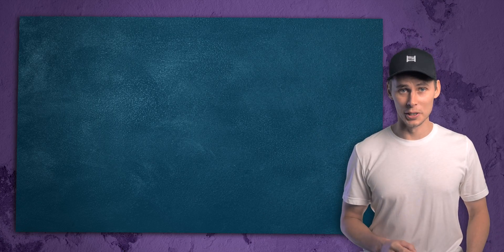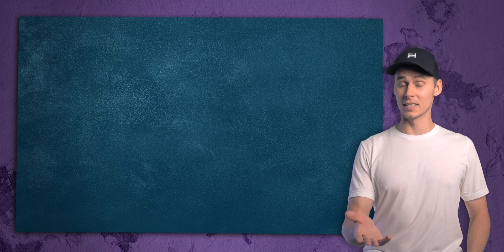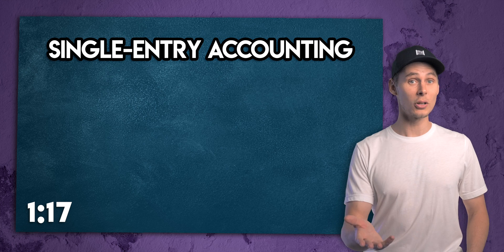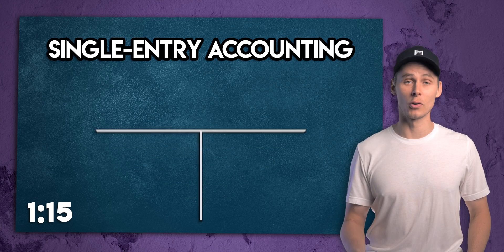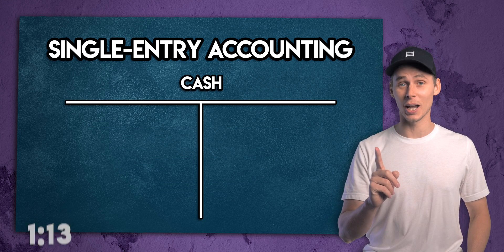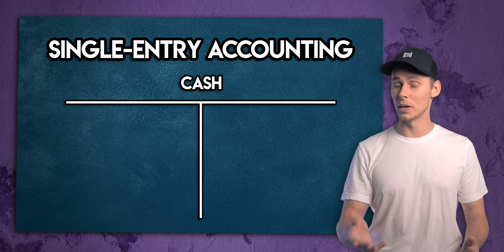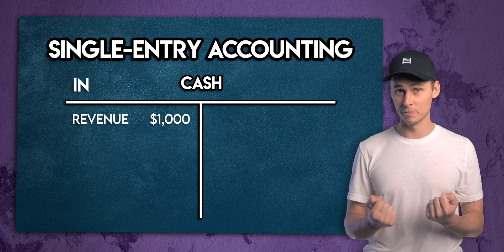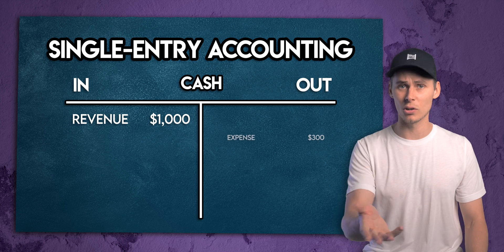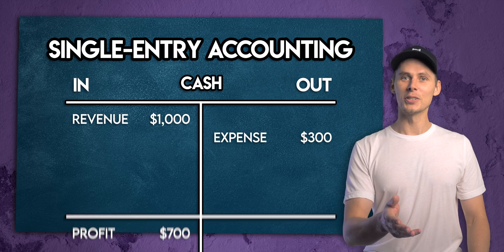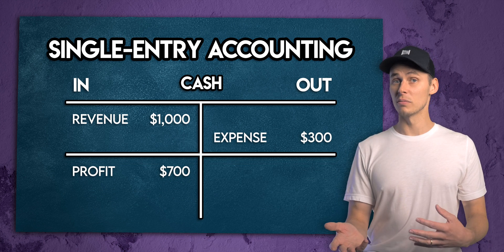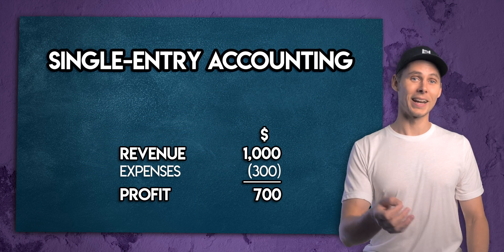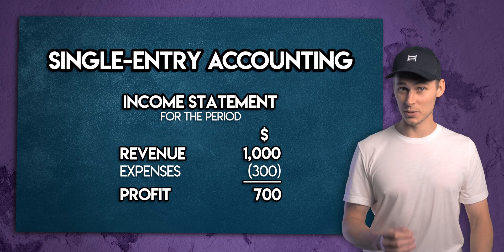Up to this point most businesses had been using single entry accounting. In single entry accounting every entry is recorded once in a cash account. When a business receives cash it records revenue, and when it pays cash out it records an expense. The difference is a profit or a loss, summarized on a financial statement called the income statement.